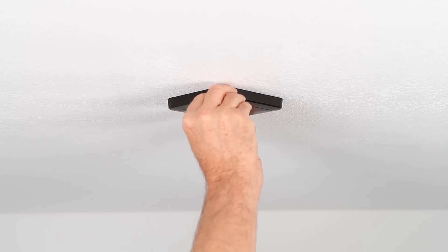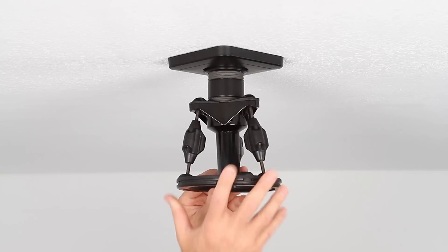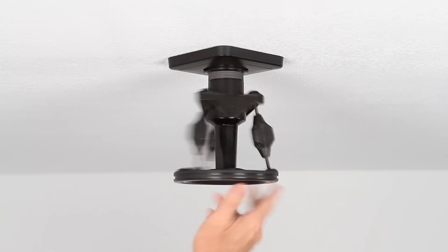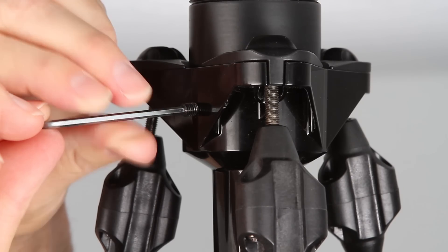Then snap the cover in place. Attach the articulation unit to the NPT pipe and install the security screws.